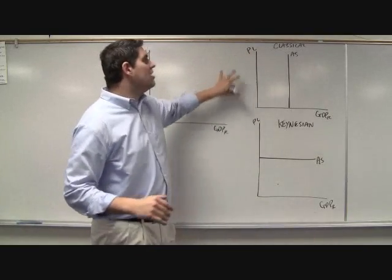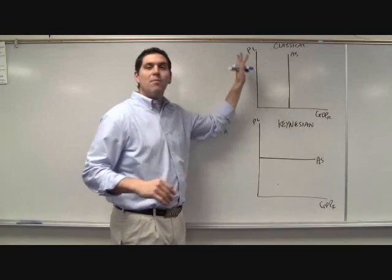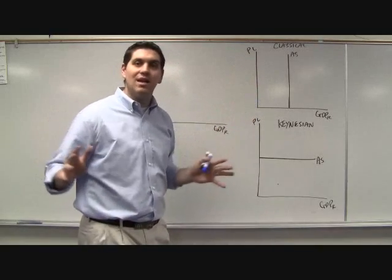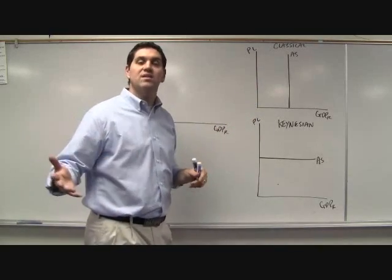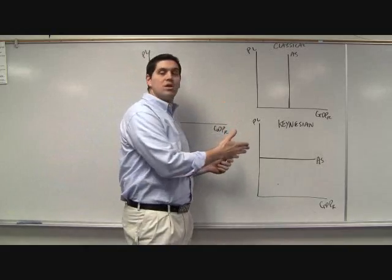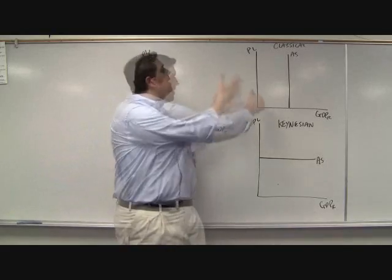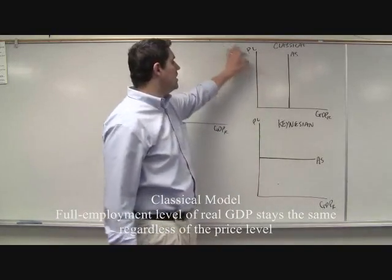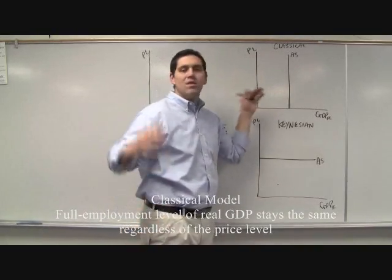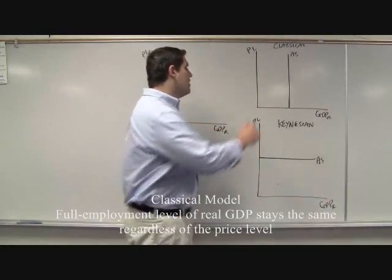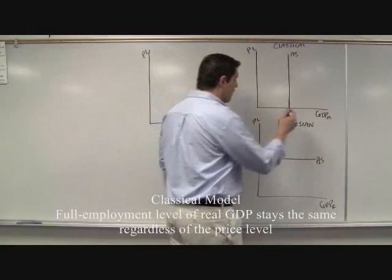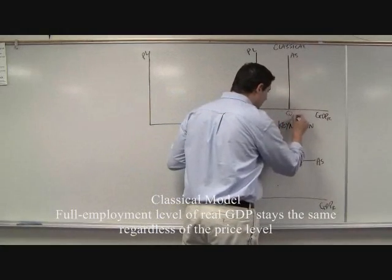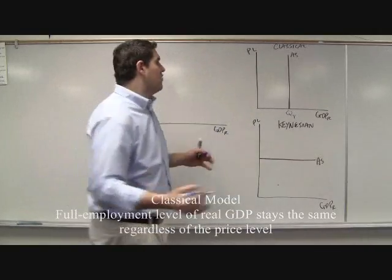The beginning school of thought in economics came with the idea that the government doesn't need to get involved because the economy fixes itself. That makes sense using the graph they had. The classical model shows price level and GDP, and aggregate supply is at the quantity of full employment. We're going to stay right here at quantity Y.